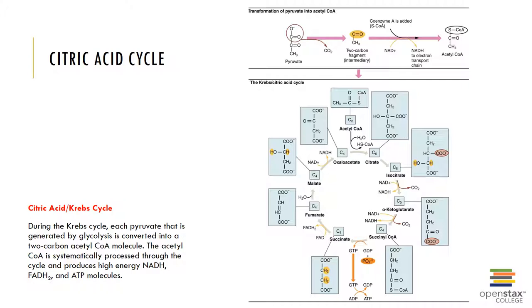The two acetyl-CoA molecules produced during the intermediate step now move through the citric acid cycle, forming several keto acids. As they move through the cycle, two more decarboxylation reactions occur, producing a total of six NADH, four carbon dioxides, two FADH2, and two ATPs, all by substrate-level phosphorylation. So the overall net gains from the intermediate step and the citric acid cycle are eight NADH, six CO2, two FADH2, and two ATPs.